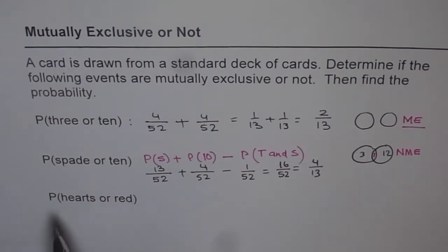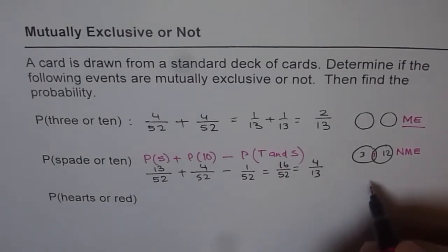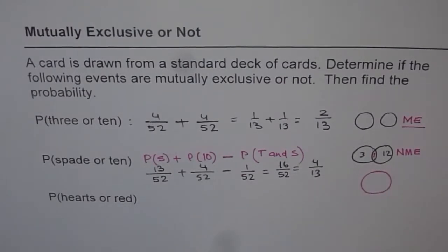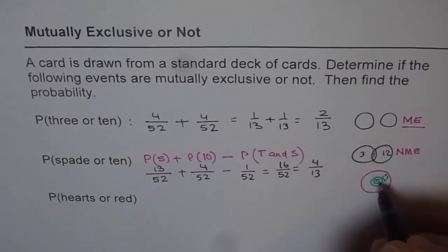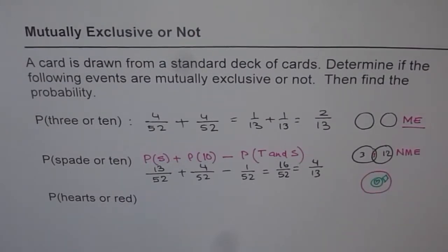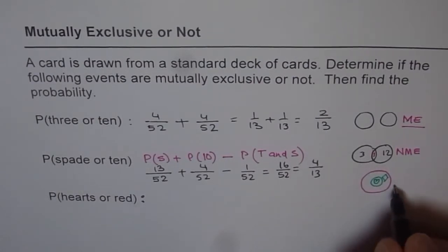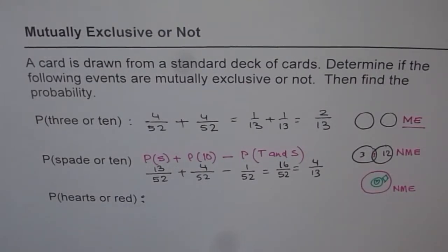The last example is probability of getting a card which is hearts or red. Now all hearts are red. Red cards include hearts and diamonds, and within that we have hearts as a subset. So the combination of hearts and diamonds is basically red cards. This case is also not mutually exclusive, since all heart cards are red cards — there is an overlap.